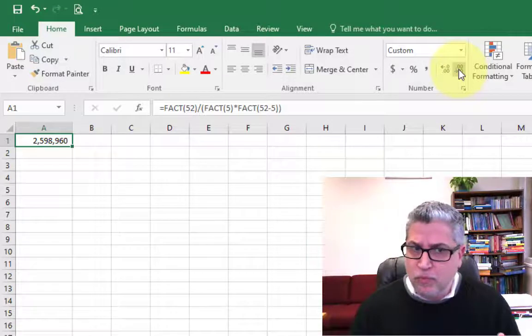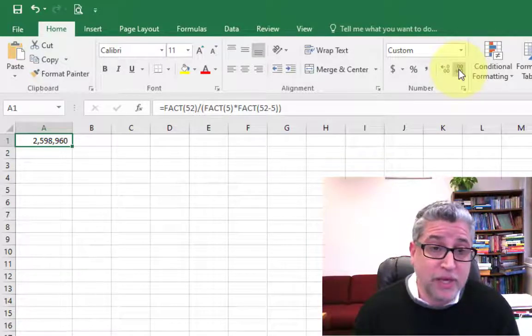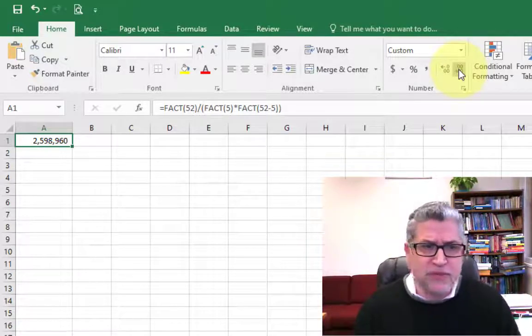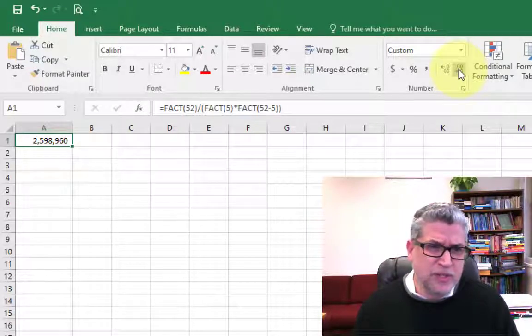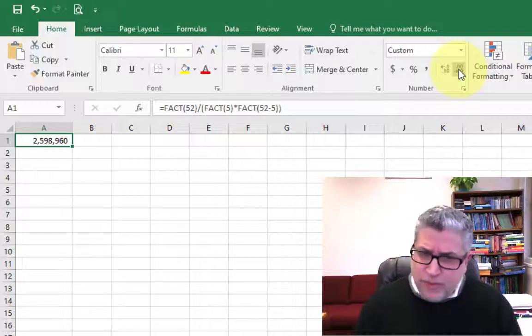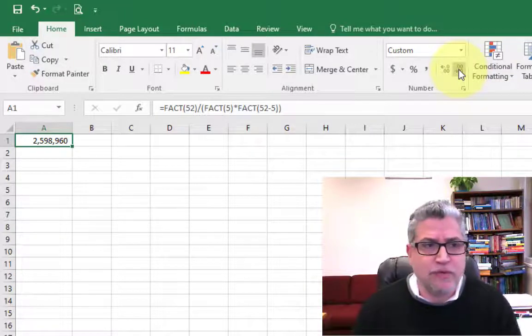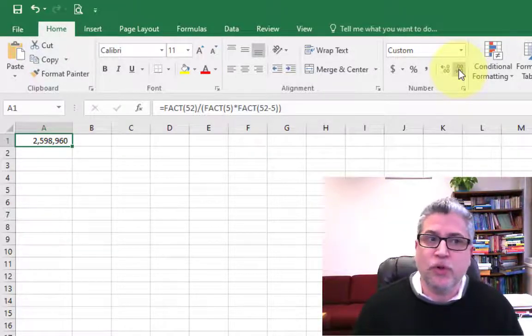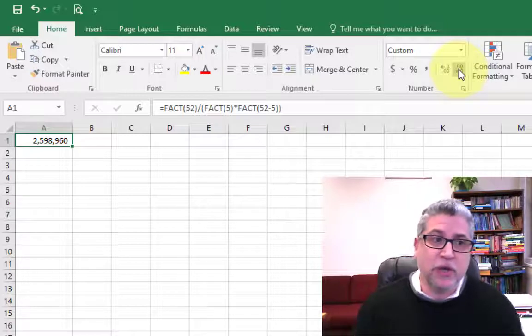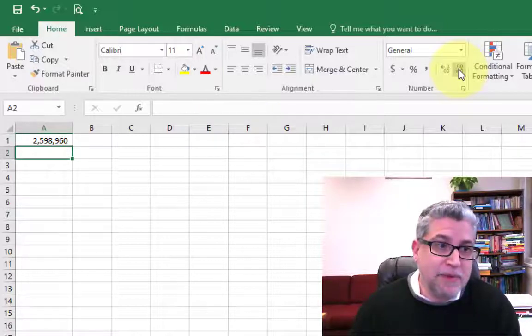Now you might get confused with the factorial formula. You know, having to remember whether it's 52 factorial and is it 5 factorial or is it 52 minus 5 factorial. You might forget that formula. So, fortunately, Excel actually has a combinations formula built in. So you don't really need to roll your own using this factorial formula.